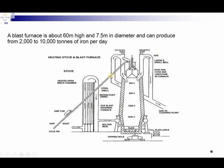Here we have a practical diagram of the blast furnace — 60 meters high and 7.5 meters in diameter, producing 2,000 to 10,000 tons of iron per day. The iron ore is placed at the top. As it moves down into the base, the temperature rises — approximately 200 degrees centigrade in the upper section and 1,600 degrees centigrade in the lowermost section. Here is the collection point where we get the slag, and at the same time there is an escape point for the gases.